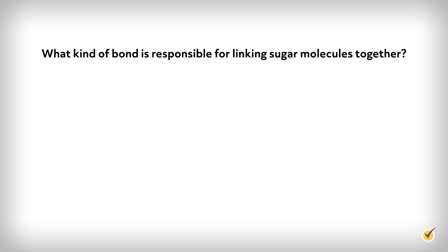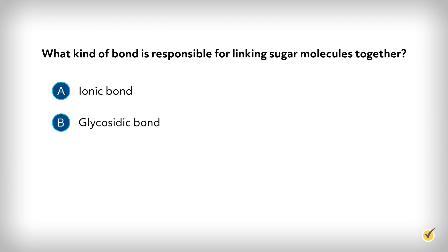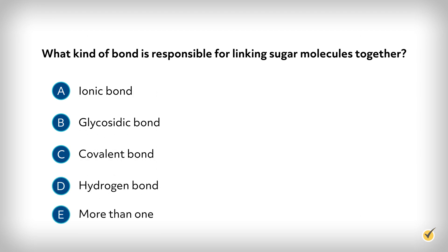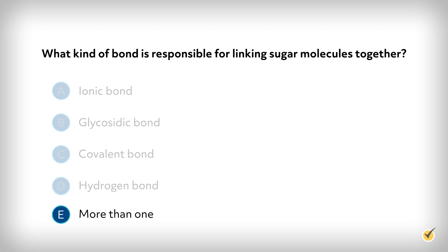What kind of bond is responsible for linking sugar molecules together? A, ionic bond; B, glycosidic bond; C, covalent bond; D, hydrogen bond; or E, more than one? The correct answer is E. Sugar molecules are linked together via glycosidic bonds, which are a type of covalent bond, so both B and C are correct. There is also some hydrogen bonding that goes on between the polymer glucose chains in cellulose, so D is also a correct answer.